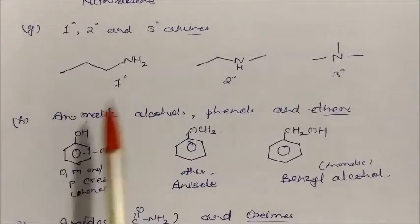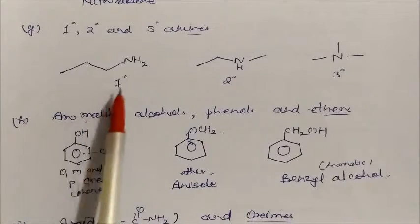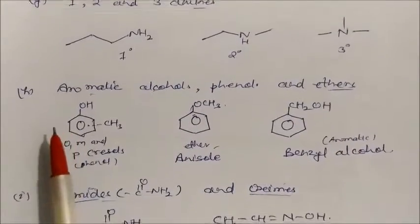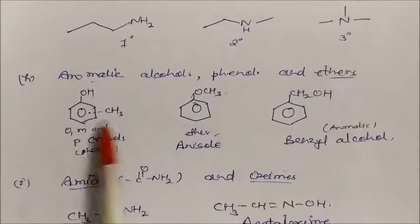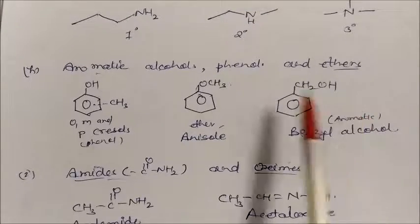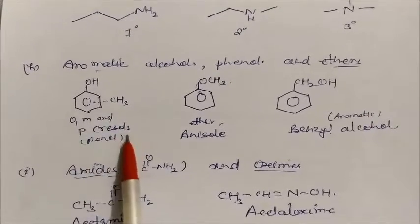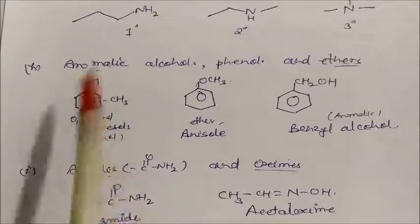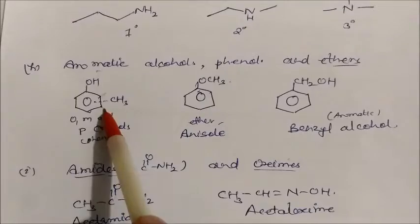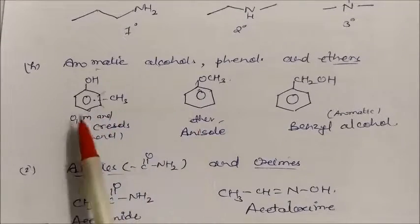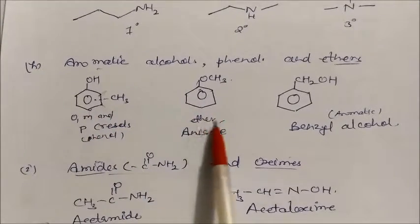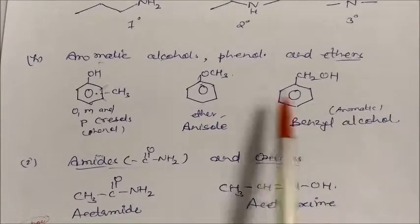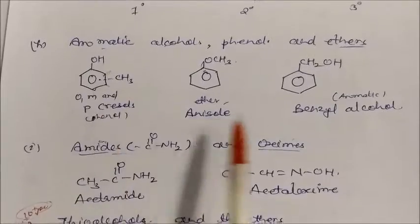Primary, secondary, and tertiary amines are also functional isomers of each other. Aromatic alcohols, phenols, and ethers are also functional isomers. For example, ortho, meta, and paracresol (phenols) can be compared with anisole (an ether) and benzyl alcohol (an aromatic alcohol) — all these are functional isomers.